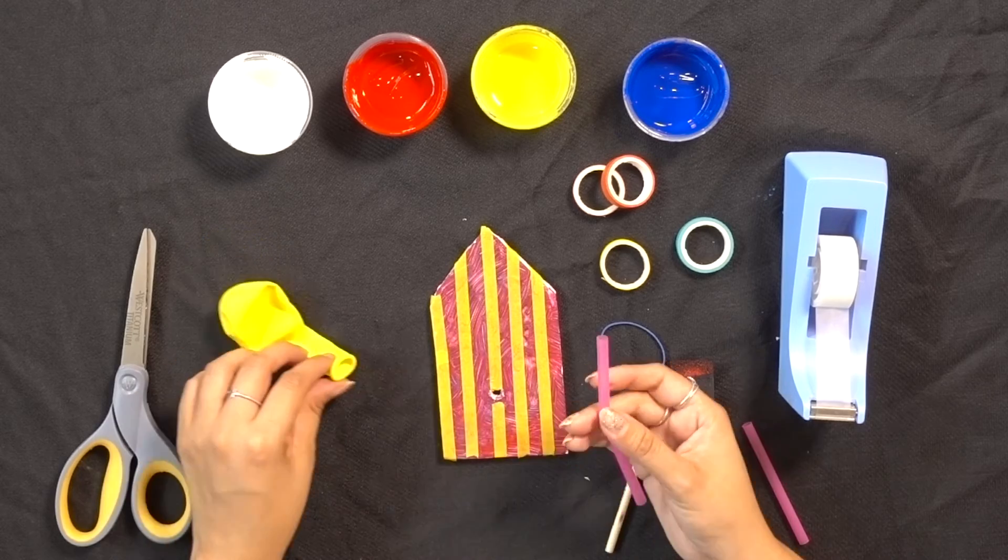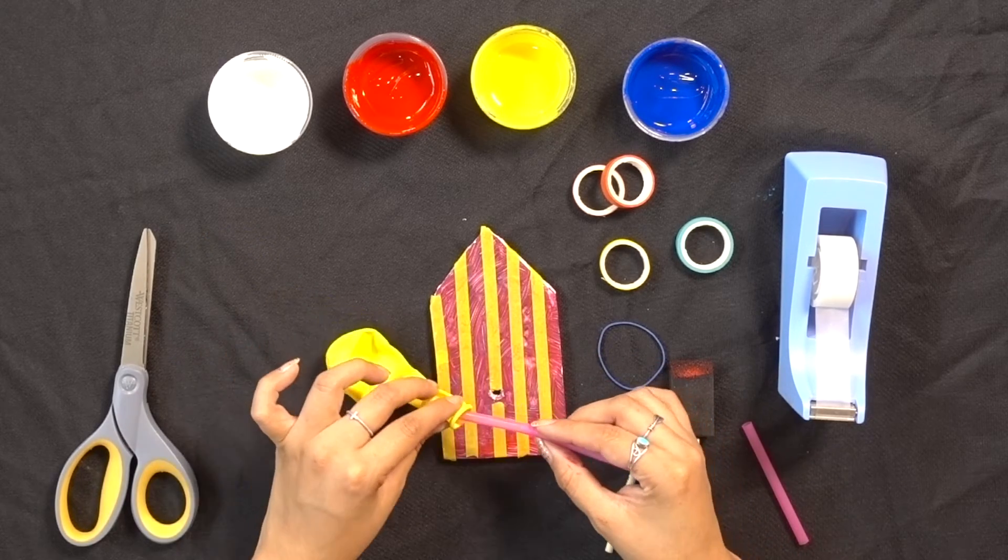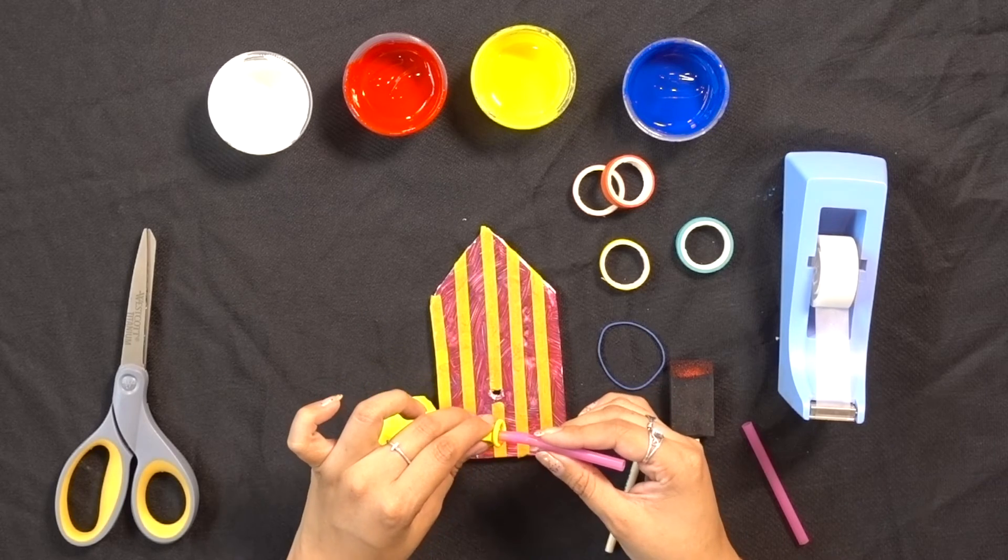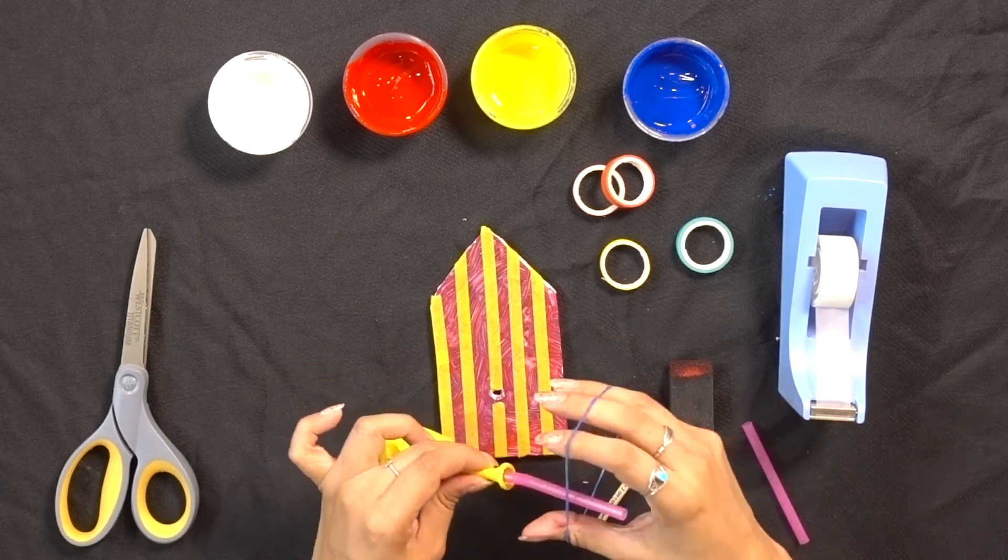Okay, so grab your straw on the bendy edge. You're going to put your balloon right there. Grab your rubber band and go ahead and tie it.